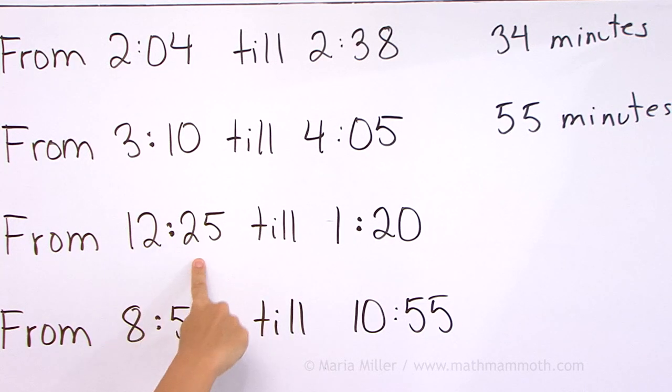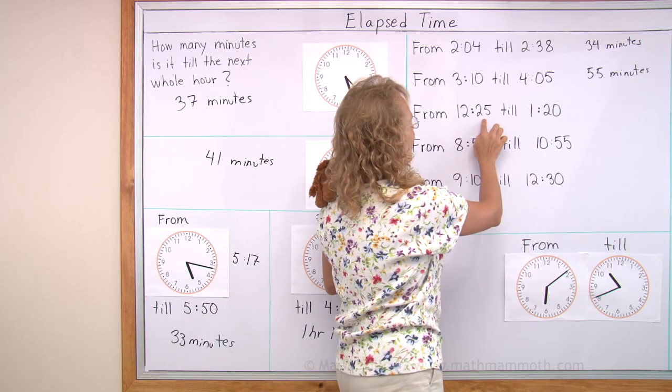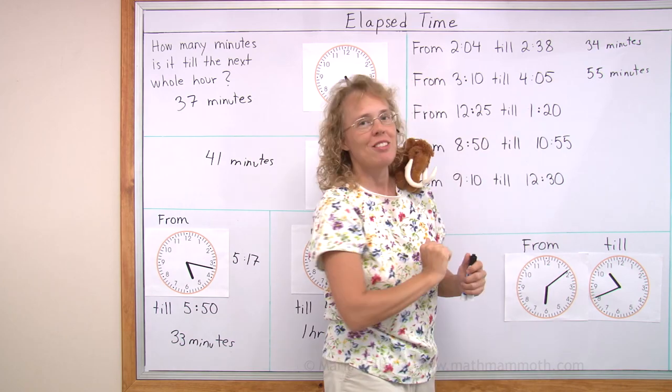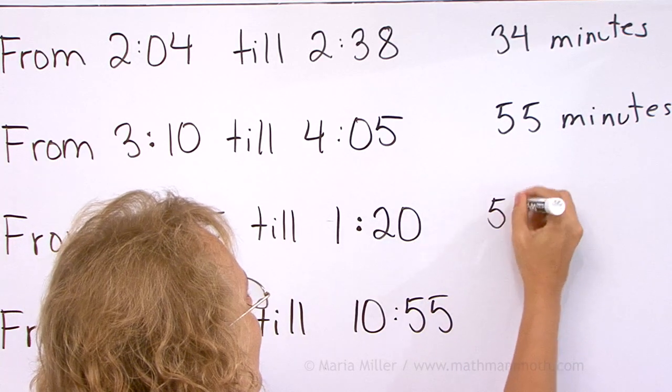From 12:25 till 1:20. How about that, you can use the same idea. You can use Matthew's idea. If this was 1:25, then it would be exactly one hour. But it is lacking five minutes from one hour, so again we have 55 minutes.